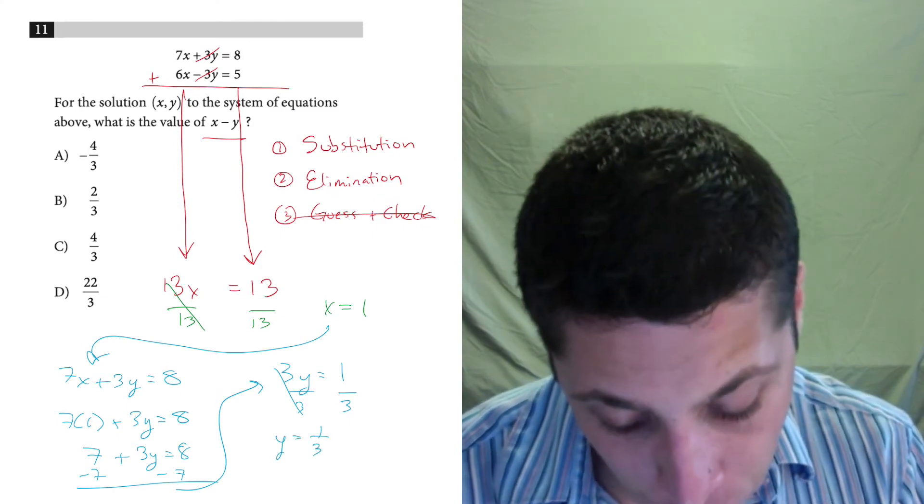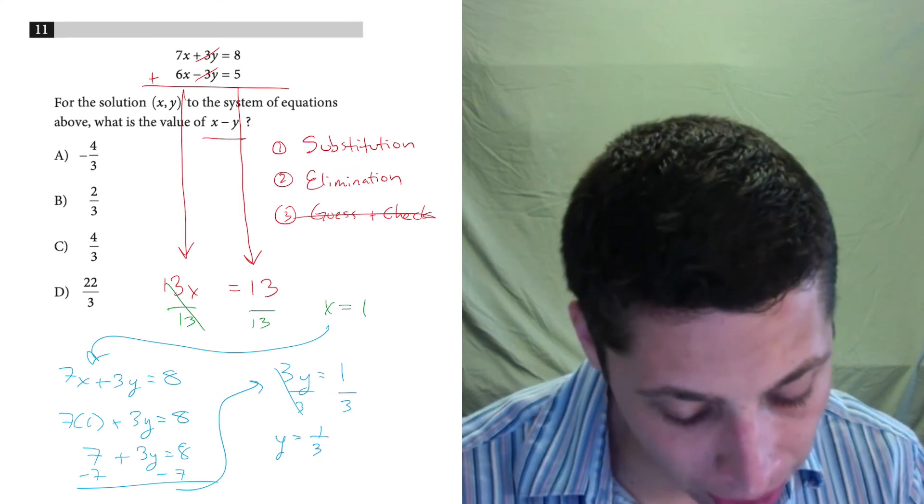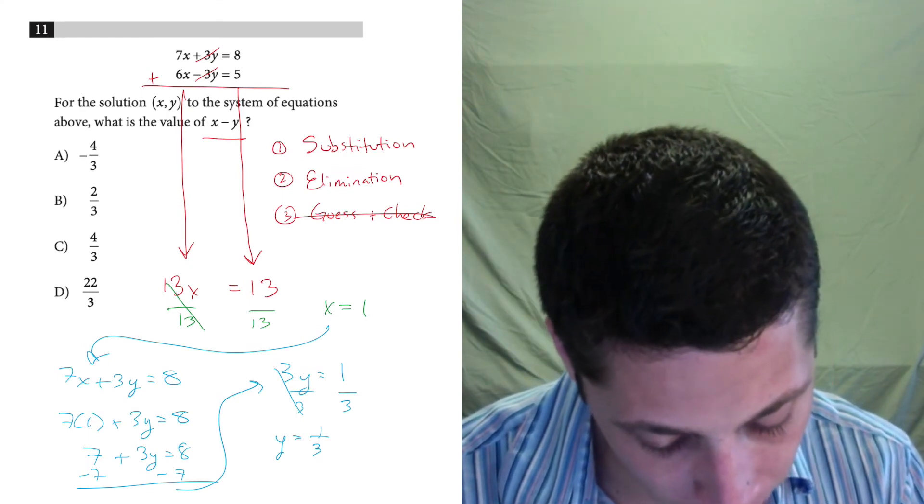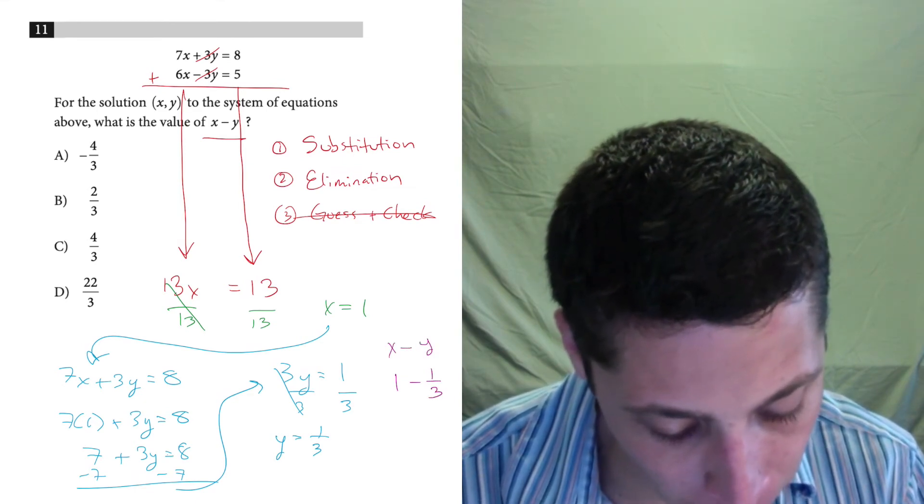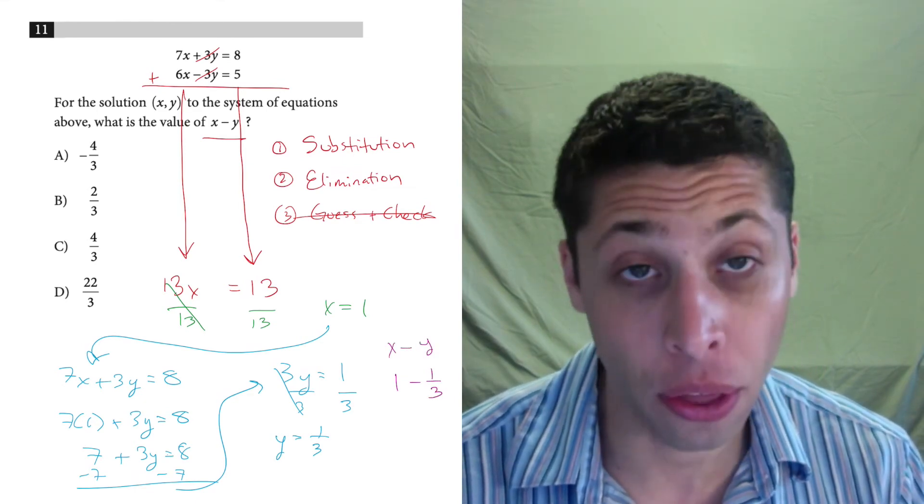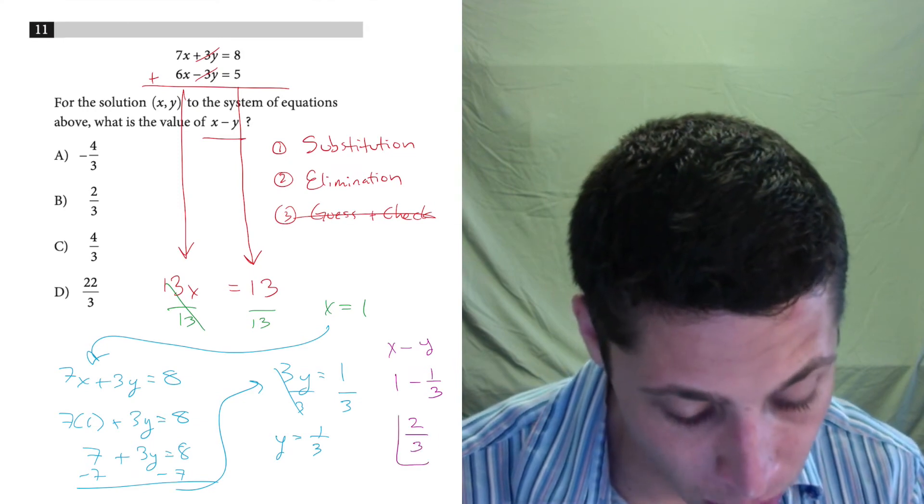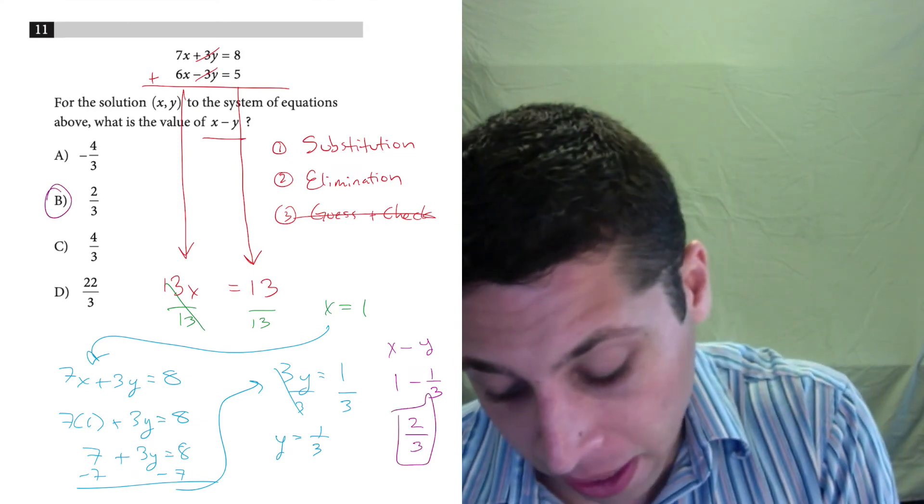And we still have one more step as now we need to do x minus y. So that's going to be 1 minus 1 third, right? x minus y. 1 minus 1 third is 2 thirds. So that ends up being the answer.